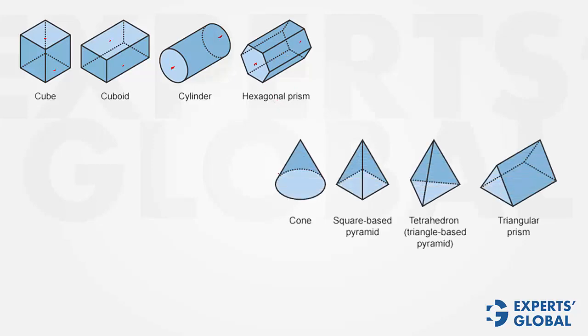Some more examples. See, there is a base and the top is pointed — this is a pyramid. Square base, pointed top — square-based pyramid. Pointed top and triangular base — therefore, triangle-based pyramid.